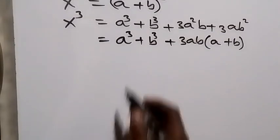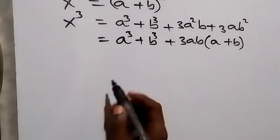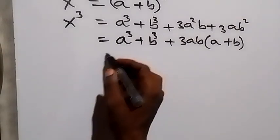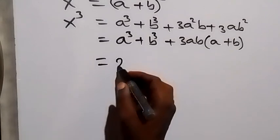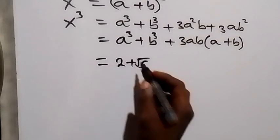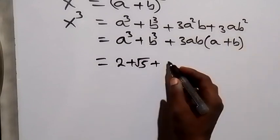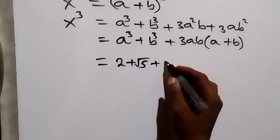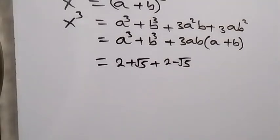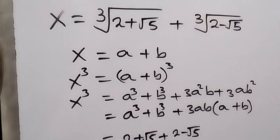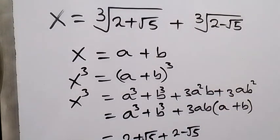Now, since a is the cube root of (2 + √5), a cubed will be 2 + √5 — the cube cancels the cube root. Similarly, b cubed becomes 2 − √5, since the cube cancels the cube root there as well.